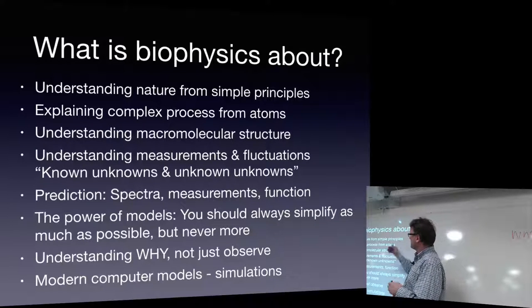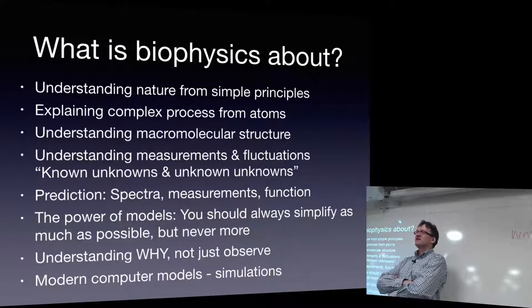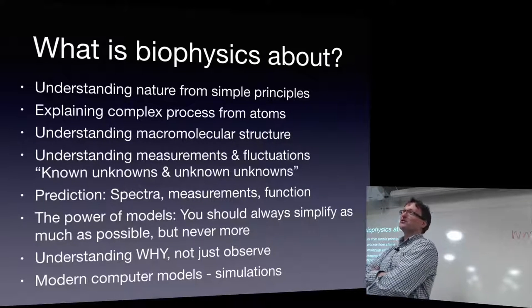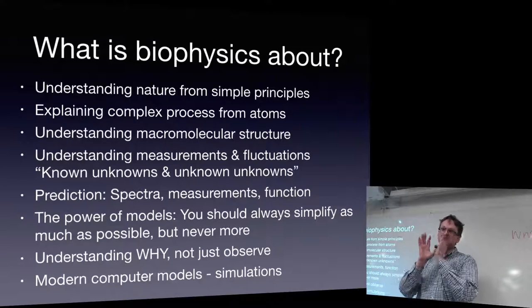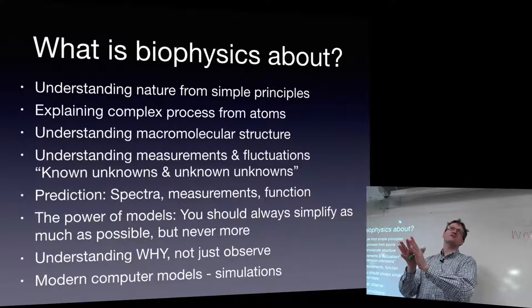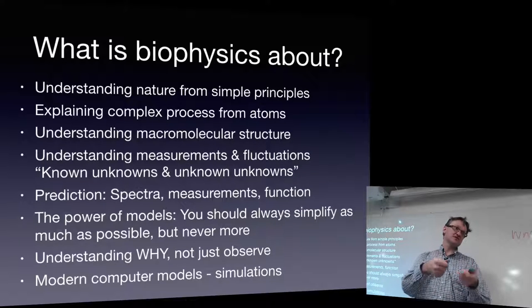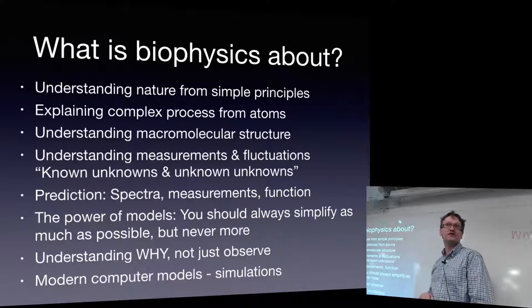Biophysics in general, and this course in particular, is very much about understanding how these complicated molecules work from simple principles. The reason why the simple principles are important is that it's usually something that goes wrong influencing the simple principles that leads to disease. We're going to try to explain these complex processes from atoms and spend a lot of time understanding macromolecular structure. If you start a modern drug development process in a pharmaceutical company, the first thing you need to do is identify the target receptor, understand the structure of these receptors, how they interact with other molecules, what goes wrong when we get disease, and whether we can restore that by changing how it works. Then you start designing a drug to do that restoration process.